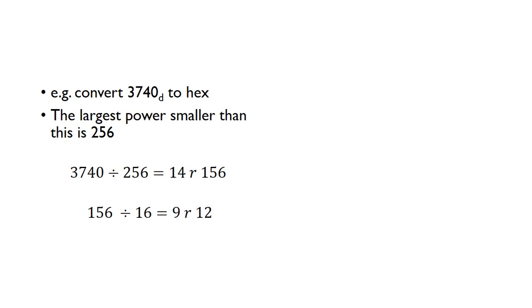So we'll take our remainder then, and divide it by the next lowest power. So we've got our remainder, 156, divide it by 16, that gives us 9 remainder 12. And again, take the remainder, divide it by the next lowest power, which is 1, so that obviously gives us 12 remainder 0.